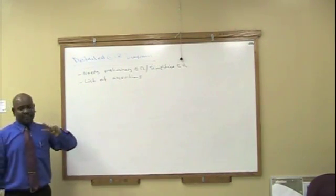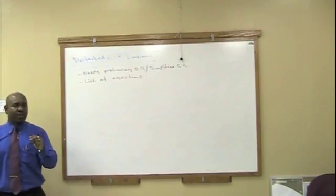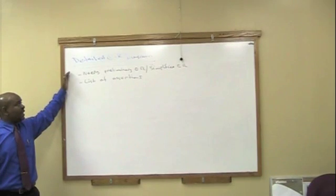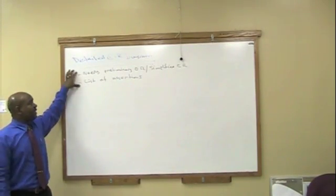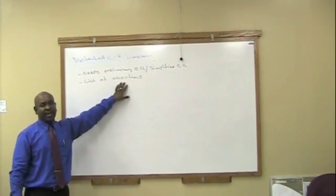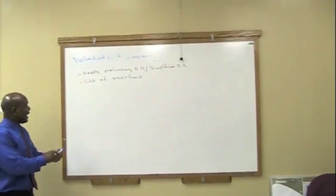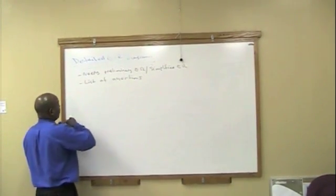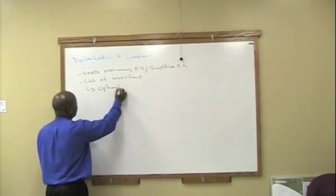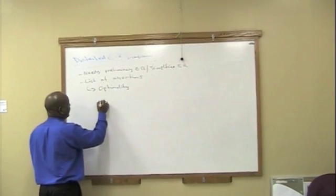Now, two things, once again, are very important when we're dealing with the detailed EI diagram. In addition to these two, we need something that we used when we were creating a list of assertions. And that is optionality and cardinality.